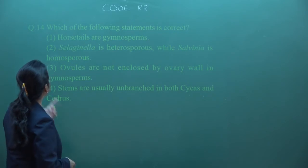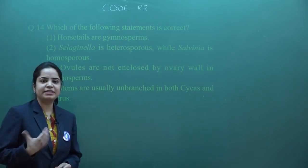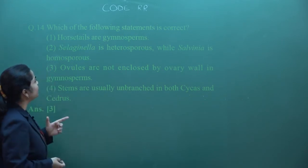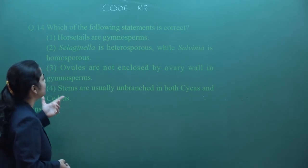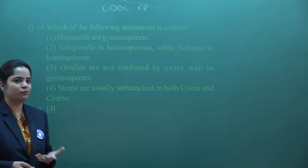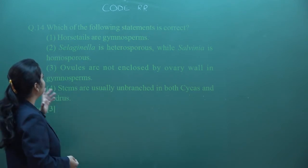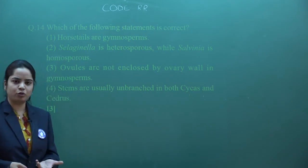The next question is question number 14. Which of the following statement is correct? Here the first statement given is horse tail is a gymnosperm. No, this statement is not correct. Horsetails are not gymnosperms. Then Selaginella is heterosporus while Salvinia is homosporus. That is also wrong.